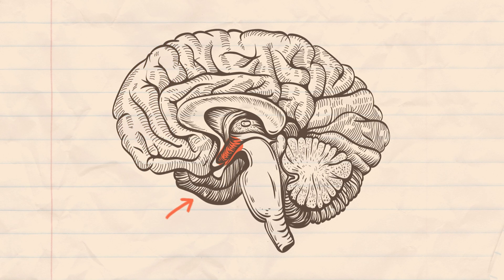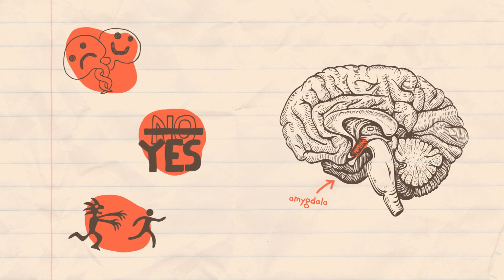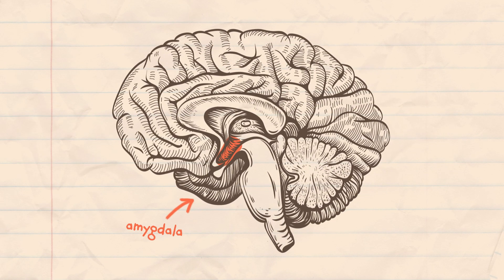The amygdala is responsible for emotions, impulses, and instinctive behavior. It's part of the brain sometimes referred to as the emotional brain.